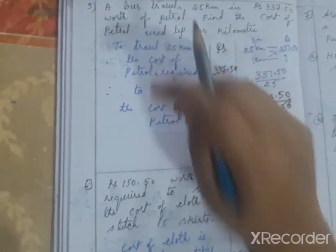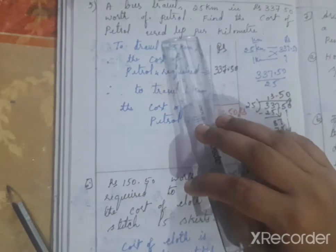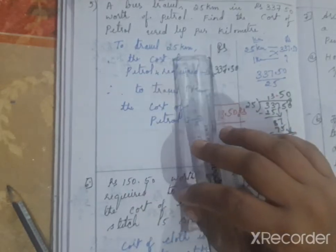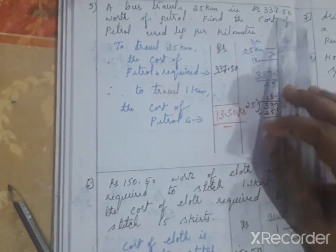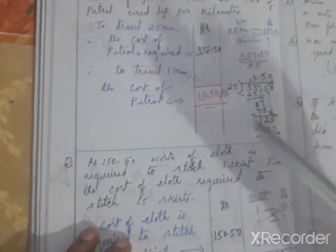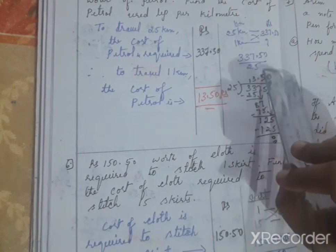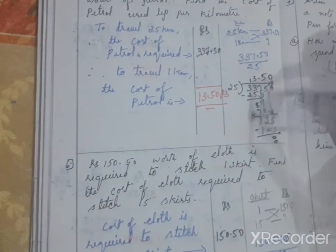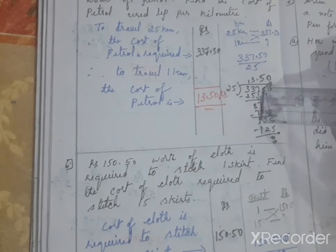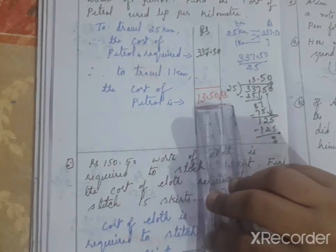Fifth question: A bus travels 25 kilometers using petrol worth rupees 337 and 50 paisa. Find the cost of petrol used per kilometer. To travel 25 kilometers, the cost of petrol required is 337.50. Therefore for one kilometer: 1 into 337.50 divided by 25. Remove the decimal point, divide as actual division, then after two digits from the right place the decimal point. The answer is 13 rupees 50 paisa.